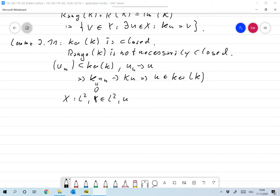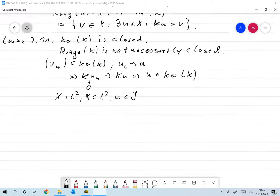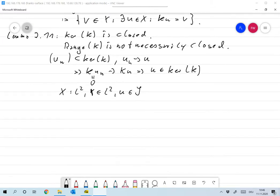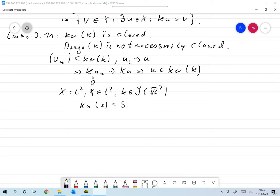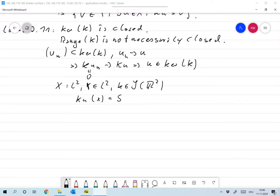For some u which is infinitely often differentiable and actually fast decaying with all its derivatives, we look at the integral operator Ku of x defined as the integral over R k(x,y) u(y) dy over R2. Let's take R here.